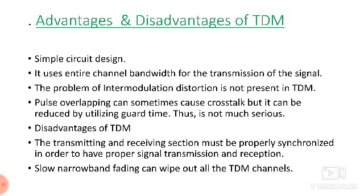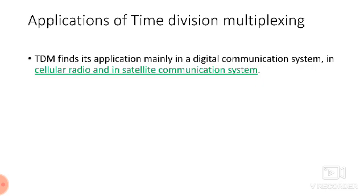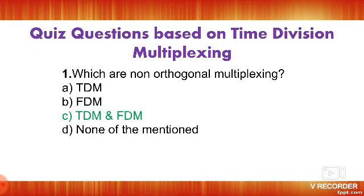The advantage of TDM is that it is very simple and uses less bandwidth. The disadvantage is that synchronization is required — the transmitting and receiving sections must be properly synchronized. A slow narrowband signal can wipe out all TDM channels, which is the main drawback. TDM is mainly used in digital communication systems, cellular radio, and satellite communication.